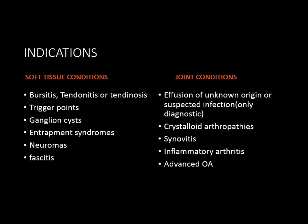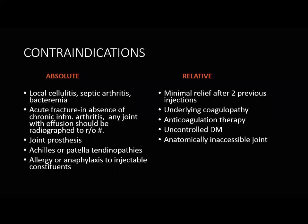Entrapment syndromes, such as thoracic outlet syndrome, can be treated with botox injection causing muscle paralysis and release of entrapped nerves. Morton's neuromas and fasciitis can be injected with steroids and local anesthetic. In joint conditions, common procedures include aspiration of joint effusion for diagnostic purposes in crystalloid arthritis like gout, synovitis of unknown origin, inflammatory arthritis, and most commonly advanced osteoarthritis.